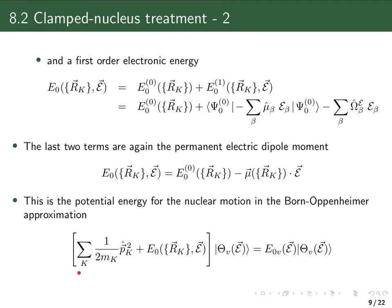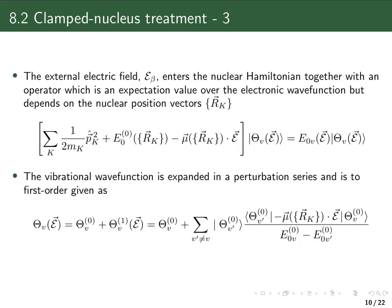To solve the perturbed nuclear problem, we note that the Hamiltonian in parentheses contains the unperturbed nuclear Hamiltonian as its first two parts, while the first-order correction to the electronic energy serves as the perturbation in the nuclear Hamiltonian.